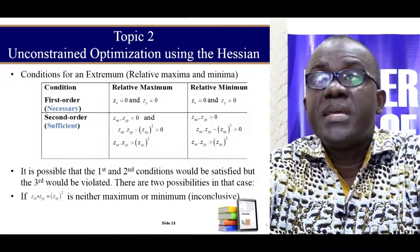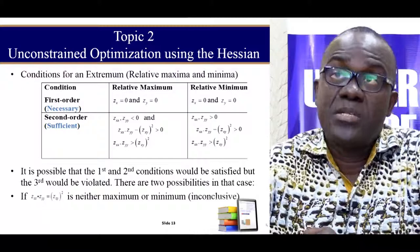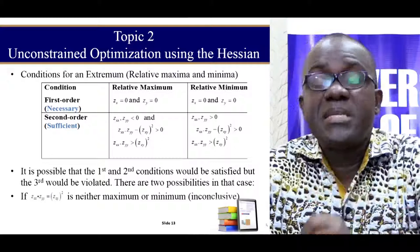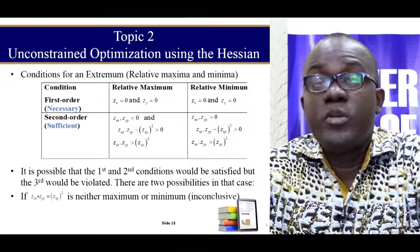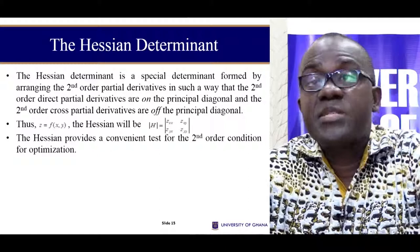The problem we have with this is that this is quite sufficient for us to discuss functions of two variables. So in a production function, when you have only two inputs, that is fine. But the question is that when you have more than two inputs, how do you go about it? And this is a value addition that we are going to make in this section.